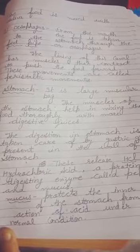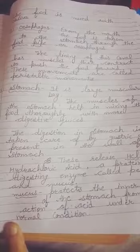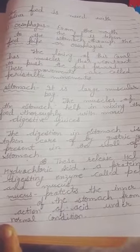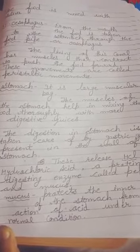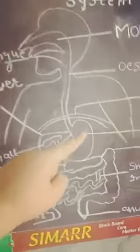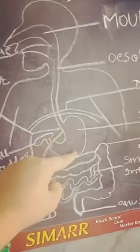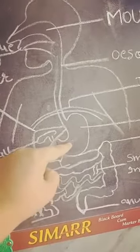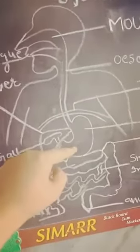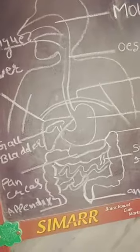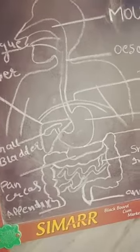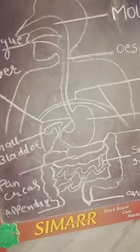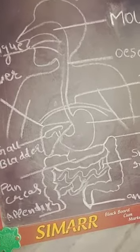The stomach is a muscular, bag-like structure with no bone in it. The muscles of the stomach help in mixing the food thoroughly with digestive juices, muscle cells, hydrochloric acid, and mucus. You can see this — it is called the stomach, and it contains mucus and hydrochloric acid.